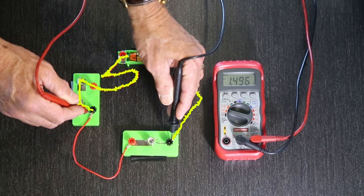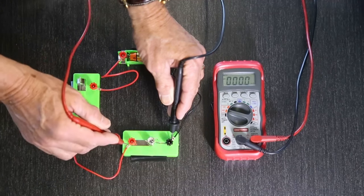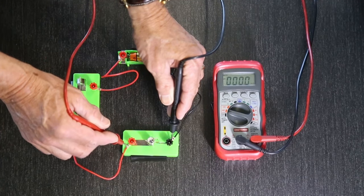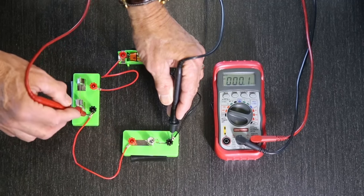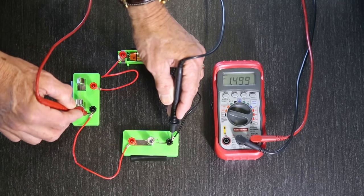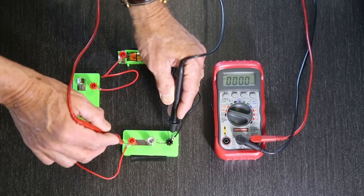There are only two possible problems left, this wire or the light bulb. Let's touch the other probe to the other connector on the light bulb. Our meter shows no reading. Let's test it. Move the probe back here on the switch connector. The meter shows us our number. Put the probe on the light bulb, nothing.